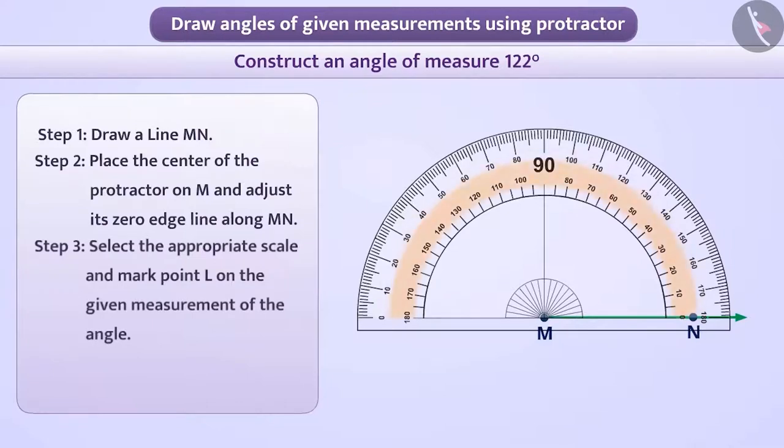Step 3. You can see that there are two scales on the protractor. Can you tell which scale do we need to see? Absolutely right. We will see the scale at which 0 degree is near the point N. That is, here we will see the inner scale.